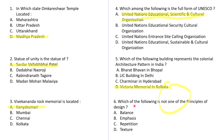Question number 6: Which of the following is NOT one of the principles of design? A: Balance, B: Emphasis, C: Repetition, D: Texture. Balance is a principle, emphasis is a principle, and repetition is also a principle. So the correct answer should be D — Texture.